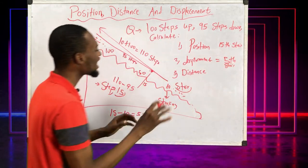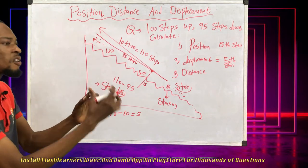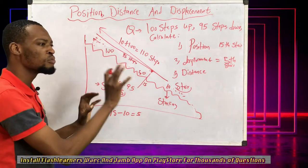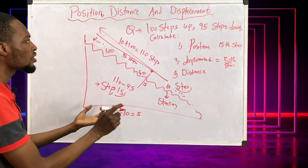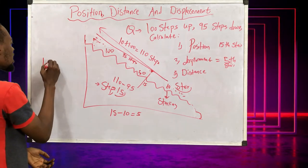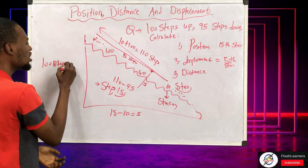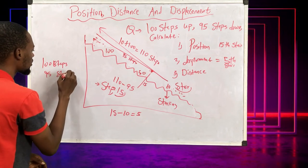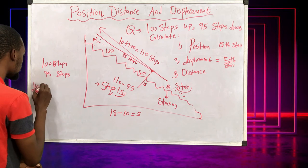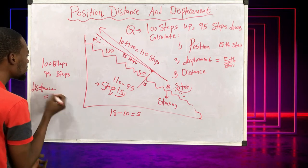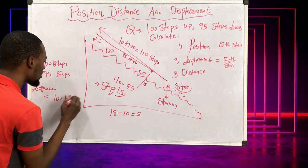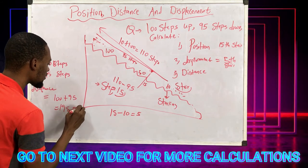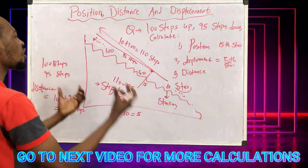What is the distance covered? Distance is simply your total movement — the total ground covered. You moved 100 steps up, then 95 steps down. So your distance is 100 plus 95, which equals 195 steps. That is the total ground you covered.